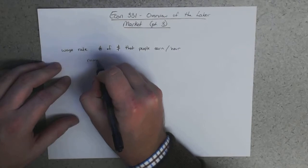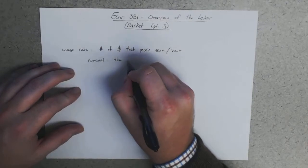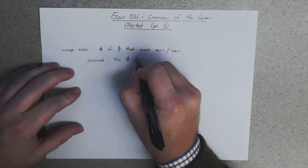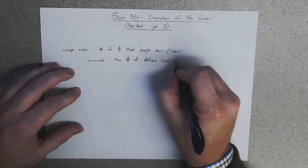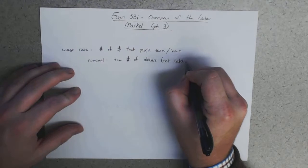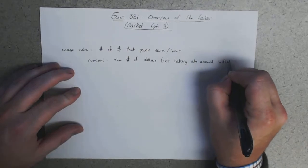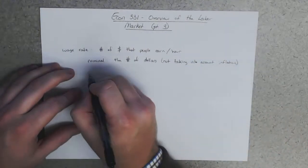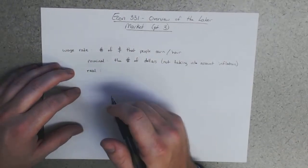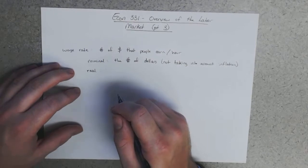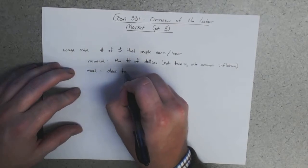There's the nominal, which is the number, the number of current dollars, the number of dollars not ignoring or not taking into account inflation. And then there are real dollars or real wage rate, I should say. The real wage rate is a measure of the number of dollars that attempts to take into account inflation. So this does take into account.